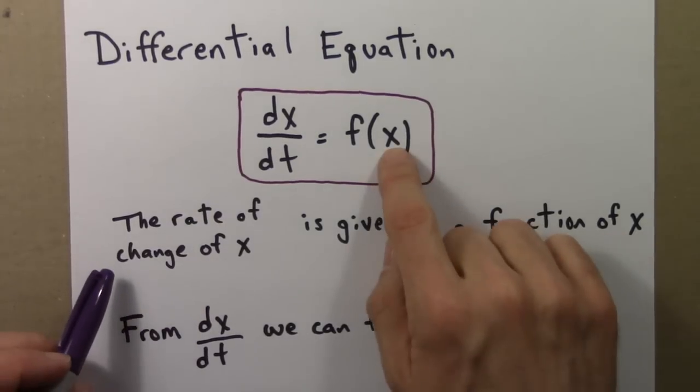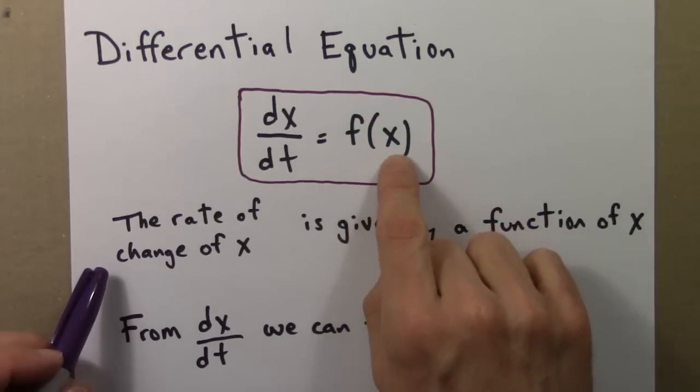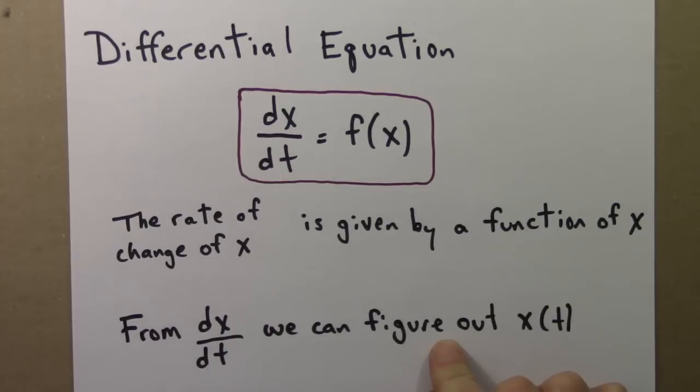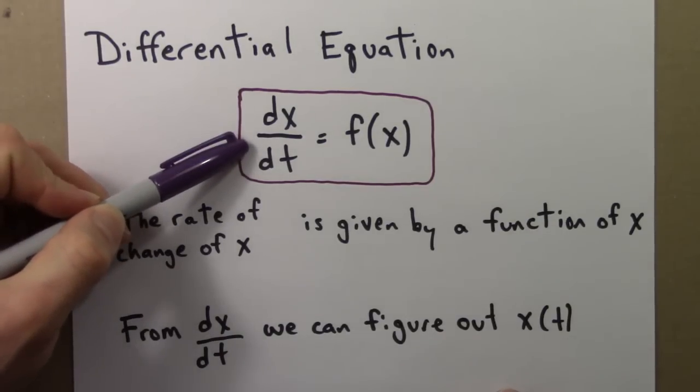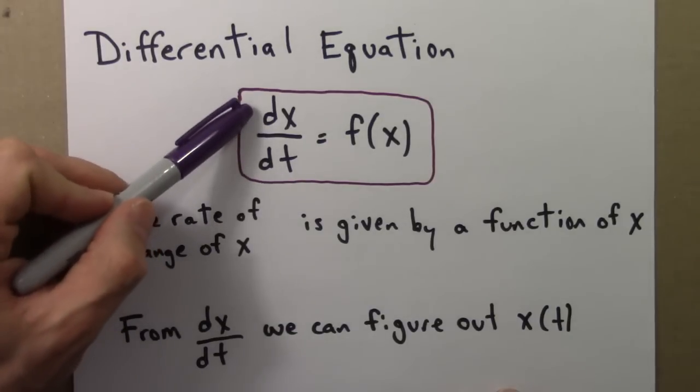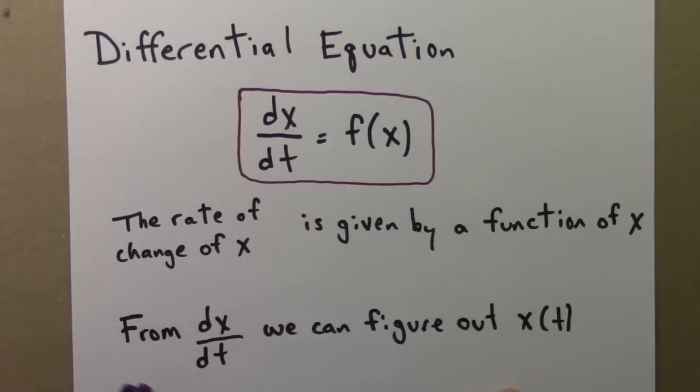So as x changes, this rule, this function, is always telling me not the next value of x, but how x continues to change. So this determines the change in x, and from the change in x, we can figure out x, the thing itself that we're interested in.